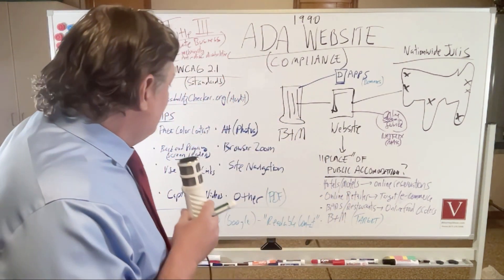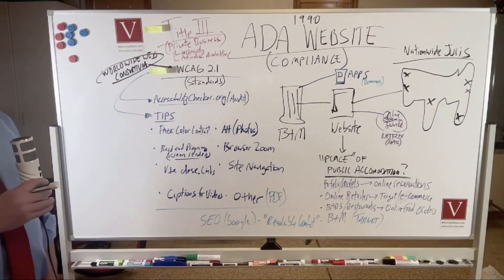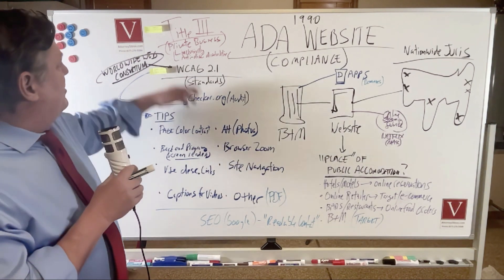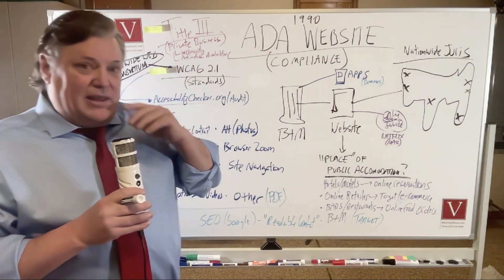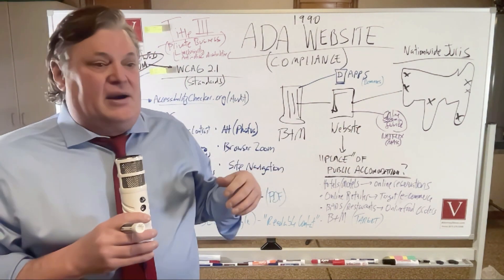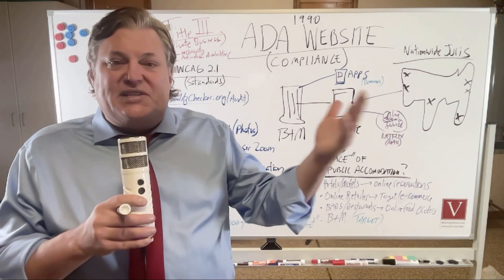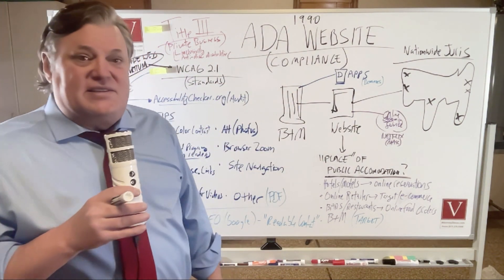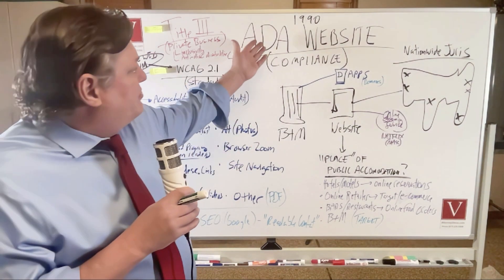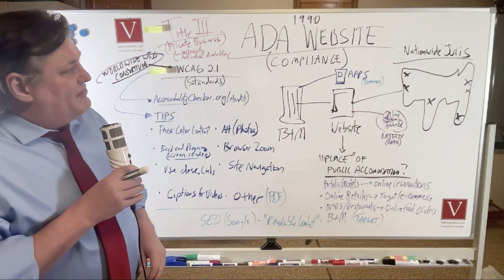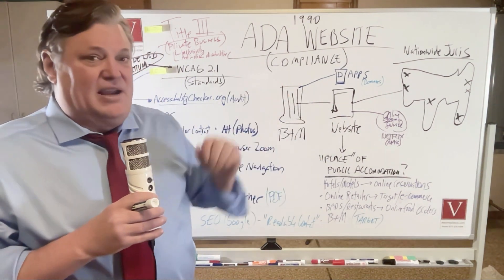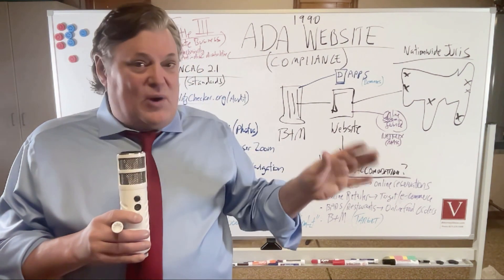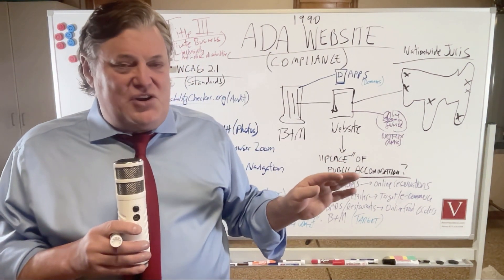This comes from Title III of the Americans with Disabilities Act. Title I deals with employment — employers need to make reasonable accommodations for disabled employees. Title II deals with cases against the government. Title III deals with private businesses and website compliance. This is pretty new, but I think it's going to get huge.